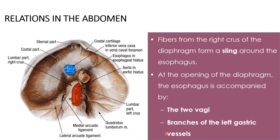Talking about the vessels: the main blood supply inside the abdomen is the left gastric artery. There is also a branch from the celiac trunk and a left inferior phrenic artery supplying the abdominal esophagus.